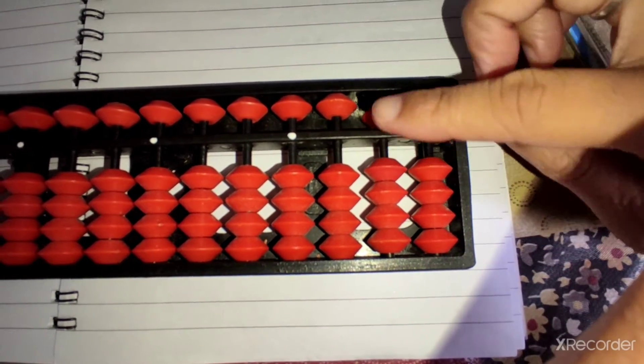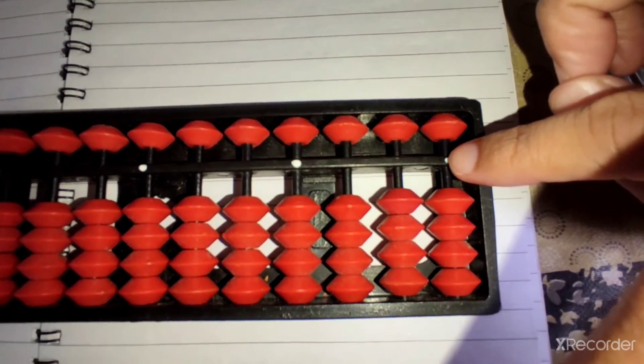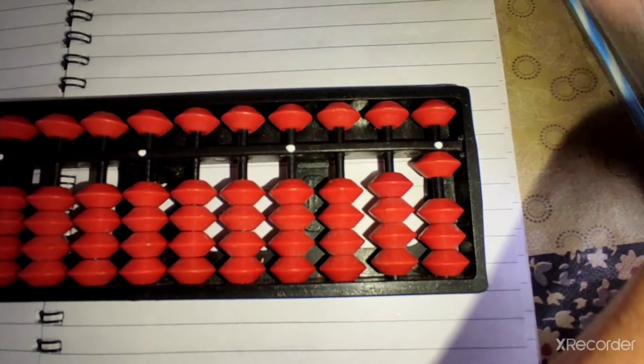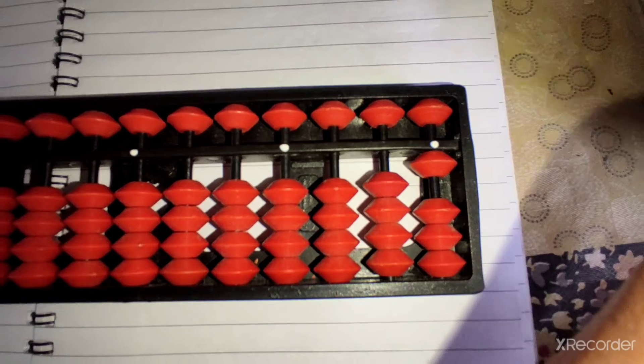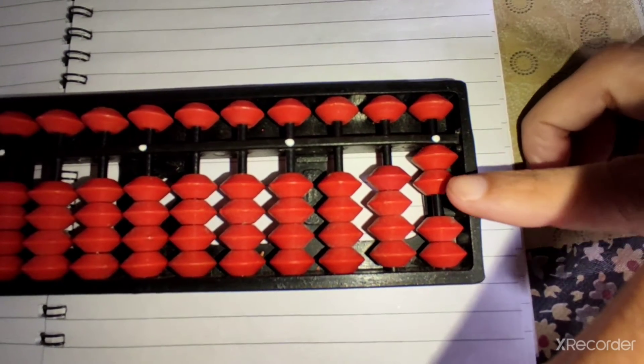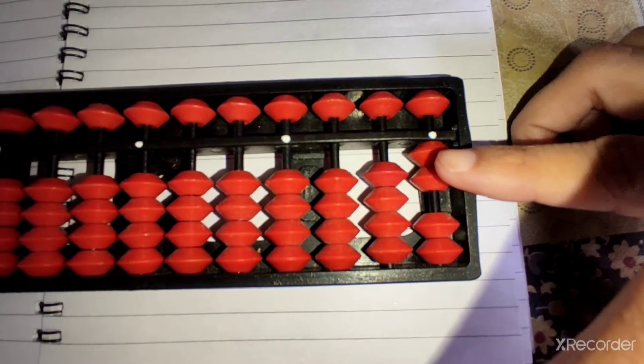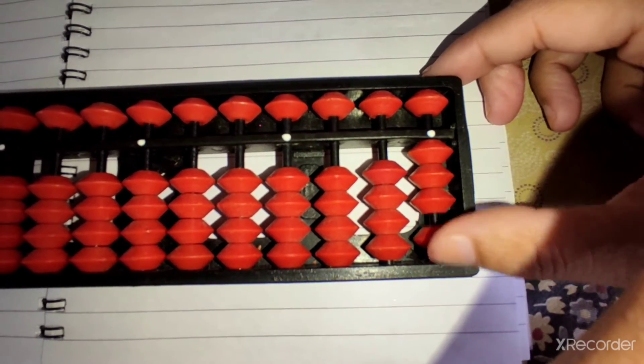So, when we count, our bead should touch the answer line. Suppose, 1, it touches the answer line. 2, it should be touched. It should not be done like this. It should be touched. 2, 3, 4.